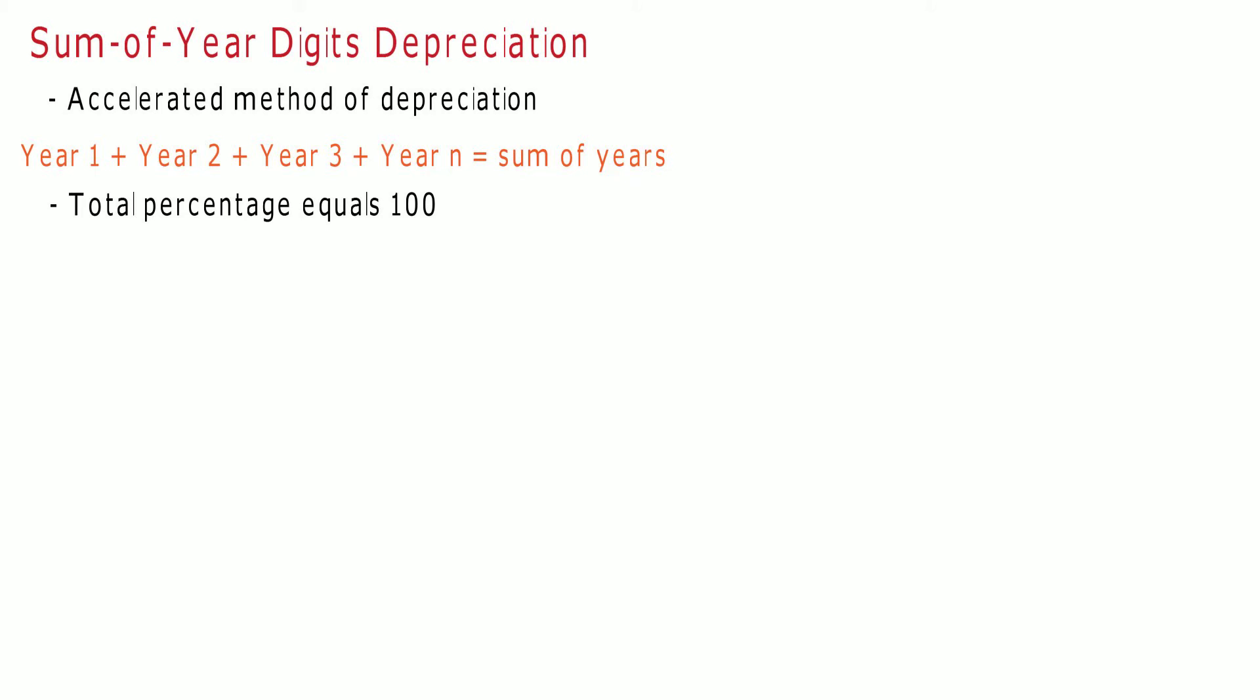The percentage for each year should add up to 100%. The formula is as follows: the depreciable base, which is the cost minus the salvage value, multiplied by the remaining useful life over the sum of the year's digits.